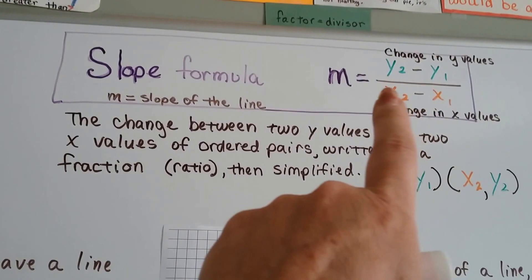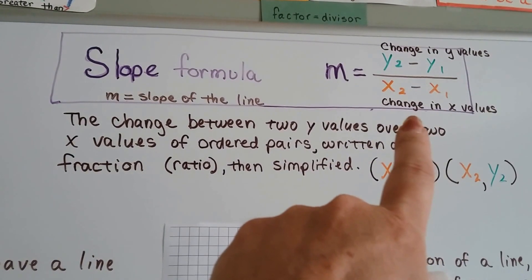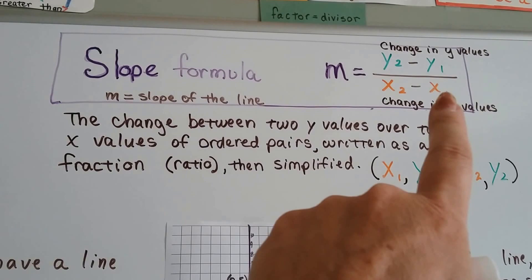If you don't remember, it's the change in y values over the change in x values. So it's y2 minus y1 and x2 minus x1 as a fraction, as a ratio.